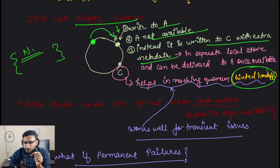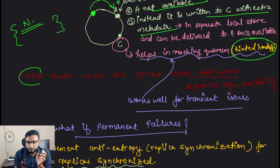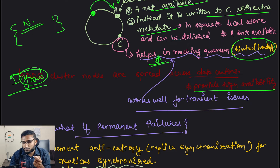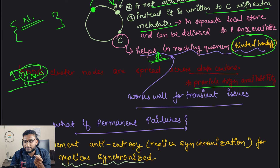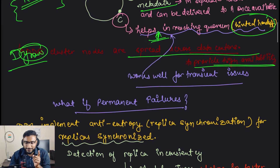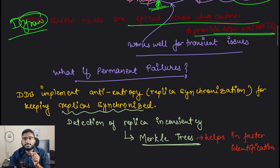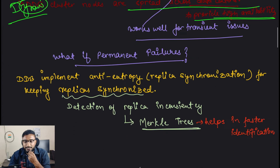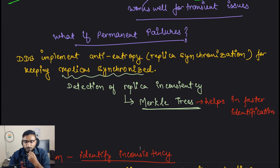Dynamo cluster nodes are spread across data centers. Sloppy quorum and hinted handoff work well for transient issues to reach quorum, increase durability, and provide high availability. But what if there are permanent failures? If a node goes down permanently, hinted handoff alone is not enough.